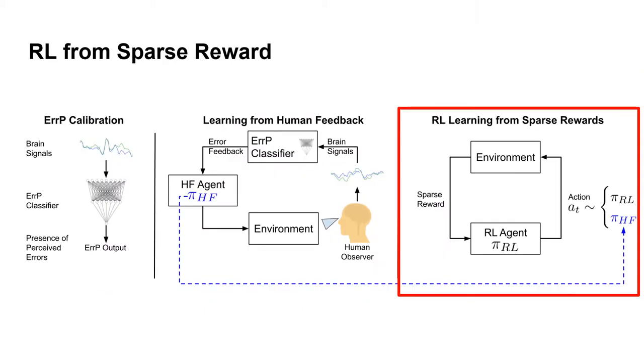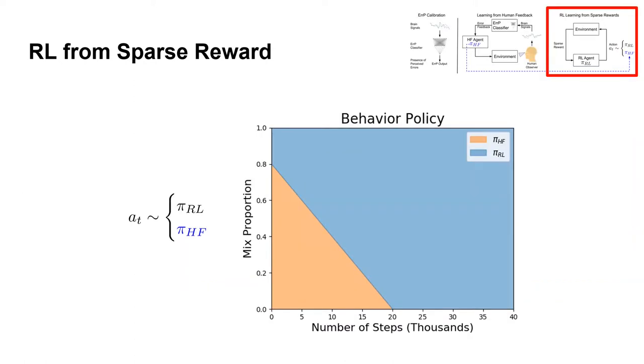In the third and final stage, the supervised feedback policy from the previous step guides exploration during the reinforcement learning process. Early in the RL process, the suboptimal human policy from the previous stage is used as the behavior policy 80% of the time. This percentage reduces linearly over time, and finally the agent refines its policy purely from sparse reward.